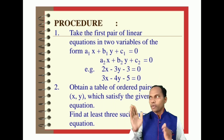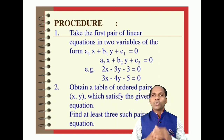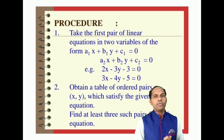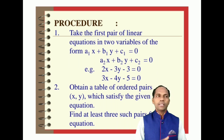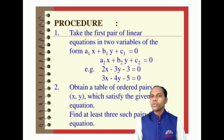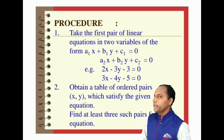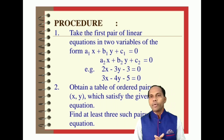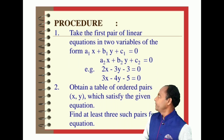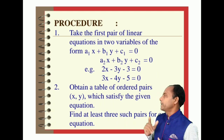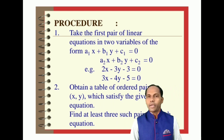For example, here we have taken: 2x - 3y - 3 = 0 as the first equation, and 3x - 4y - 5 = 0 as the second equation. From these, you can identify: a1 = 2, a2 = 3, b1 = -3, b2 = -4, c1 = -3, and c2 = -5.